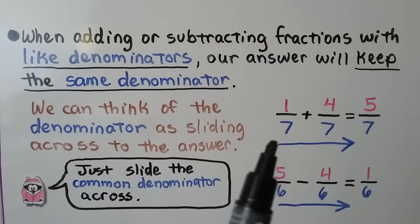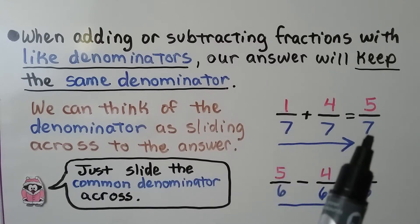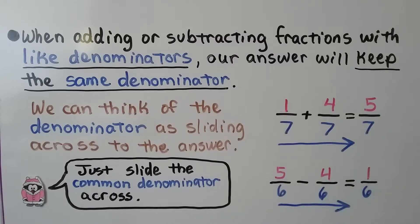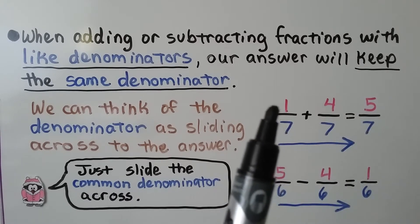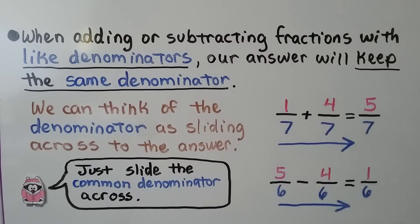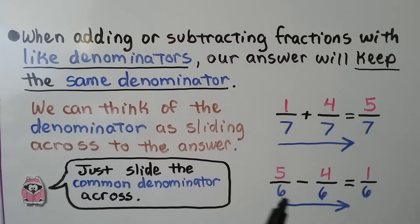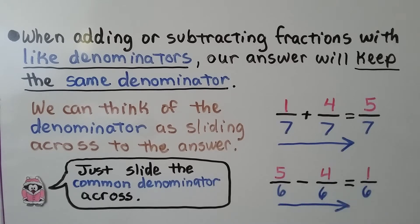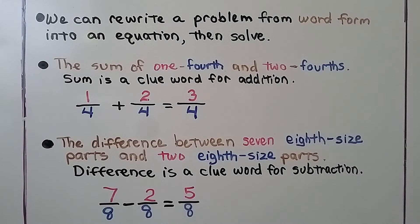We have one-seventh plus four-sevenths. We can think of the denominator as sliding across to the answer — we just slide it across and do the math: one plus four equals five, giving us five-sevenths. We have five-sixths minus four-sixths: we keep the six, slide it over to the answer, and do five minus four which is one, giving us one-sixth.